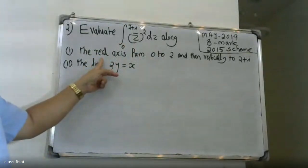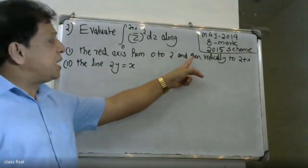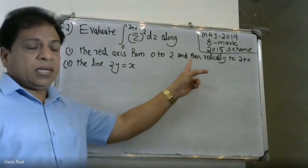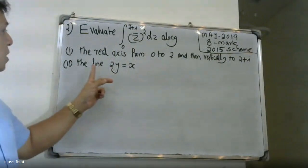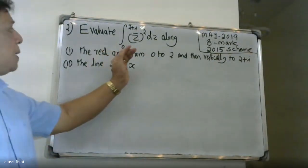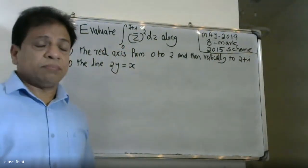The path goes along the real axis from 0 to 2, and then vertically to 2 plus i. After the question, the line is 2y equals x. I will now begin the evaluation.